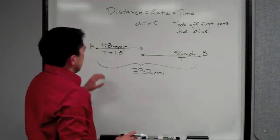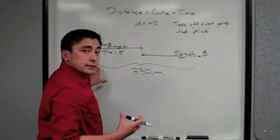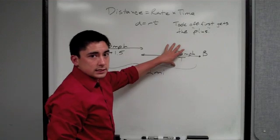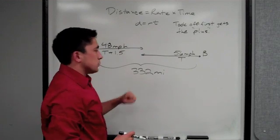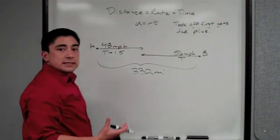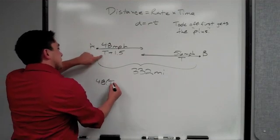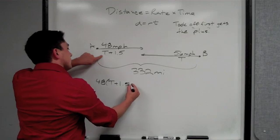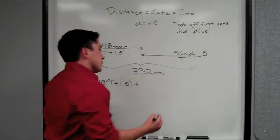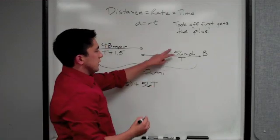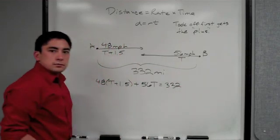Now we have to set up our equation. If you think about it, we're talking about the total distance here is 332. So this distance plus this distance should add up to equal our total, 332 miles. So we have 48 times (T plus 1.5) plus 56T equals 332.